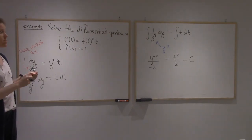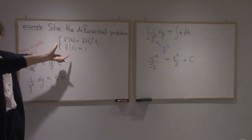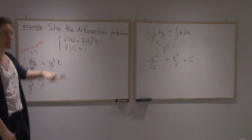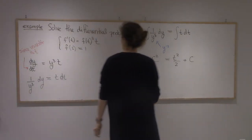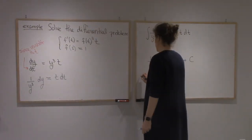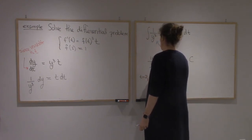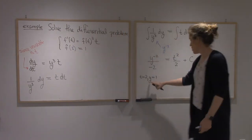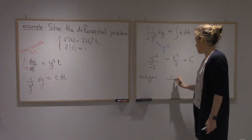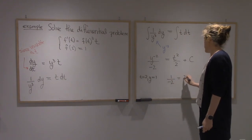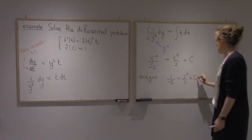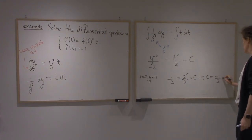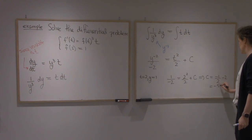Alright, at this point, C is nicely isolated. It's outside of all the functions. So this is a good time to actually use this condition. So here I have when t equals 2, y equals 1. My variable is 2. The function is 1. So that's what I have. So I get 1 over minus 2 equals 2 squared over 2 plus C. And so C is minus 1 half minus 2. So that's minus 5 halves.